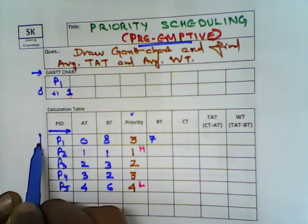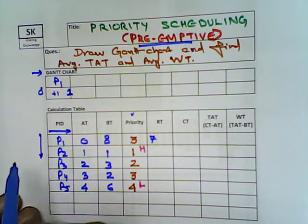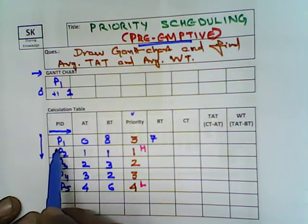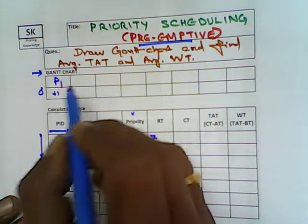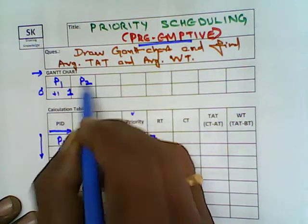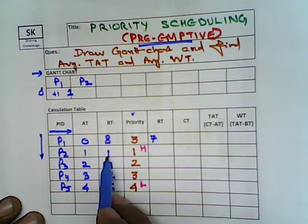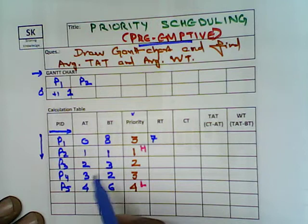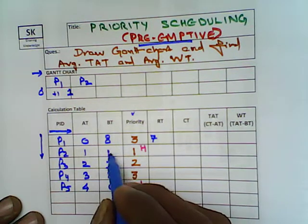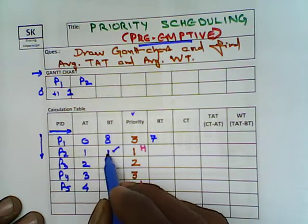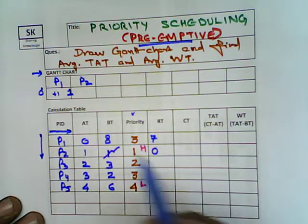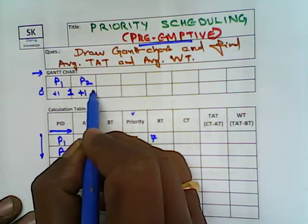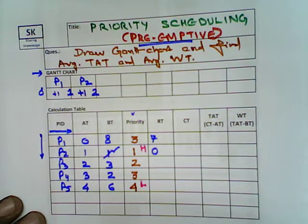After executing P1 for one unit, we check the ready queue. P2 has arrived, so it enters the queue alongside P1. The next process is P2. The burst time of P2 is only 1, so we process the entire P2. Its burst time goes from 1 to 0, and the time becomes 2.